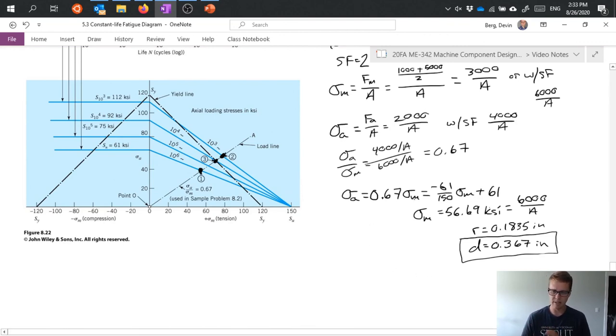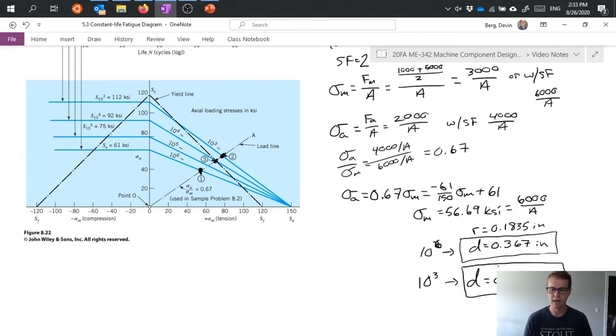So I'm not going to write it all out but I could basically apply this same criteria set up two equations solve for sigma m plug in my 6000/A. And maybe I should note that this is 10 to the sixth cycles. For 10 to the third cycles using the same process I get that my diameter would only need to be 0.326 inches so I could have a slightly smaller part if I don't have as high of a cycle requirement on the thing.